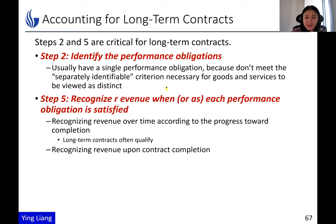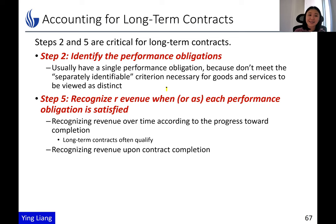How about the accounting for these long-term contracts? For the revenue recognition part, remember the previous videos covered step one to five to apply revenue recognition. Now in long-term contracts, step two and step five are critical. Step two is to identify performance obligations — basically promises. So how about long-term contracts?